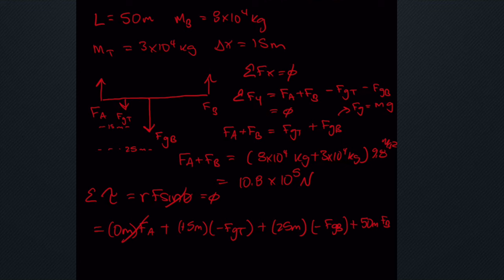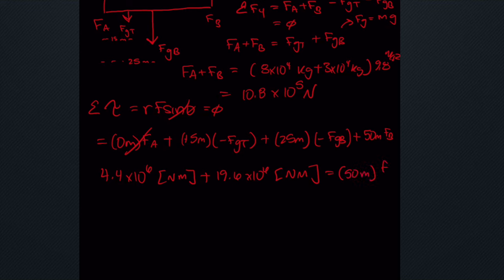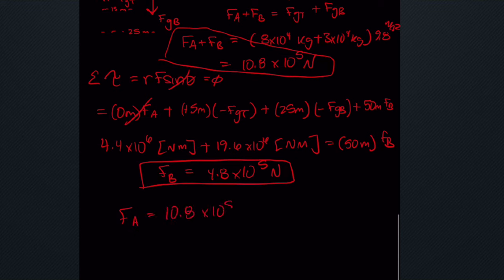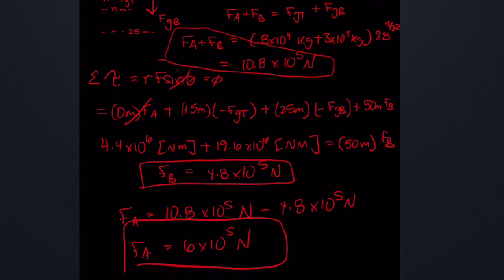Plugging in the values and bringing negatives to the other side, we get 4.4 times 10 to the 6 newton-meters plus 19.6 times 10 to the 6 newton-meters equals 50 meters times F_B. Solving for F_B gives us 4.8 times 10 to the 5 newtons. Going back to our earlier equation F_A plus F_B equals the total, we solve for F_A and get 6 times 10 to the 5 newtons. Those are the forces supporting the bridge.